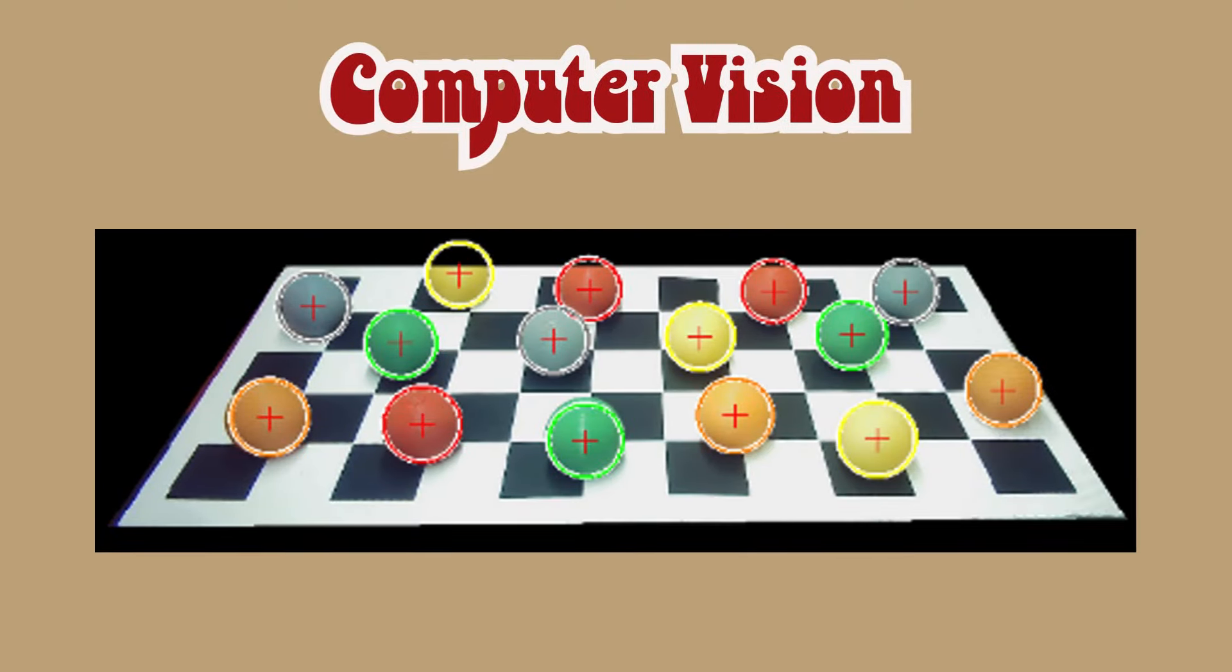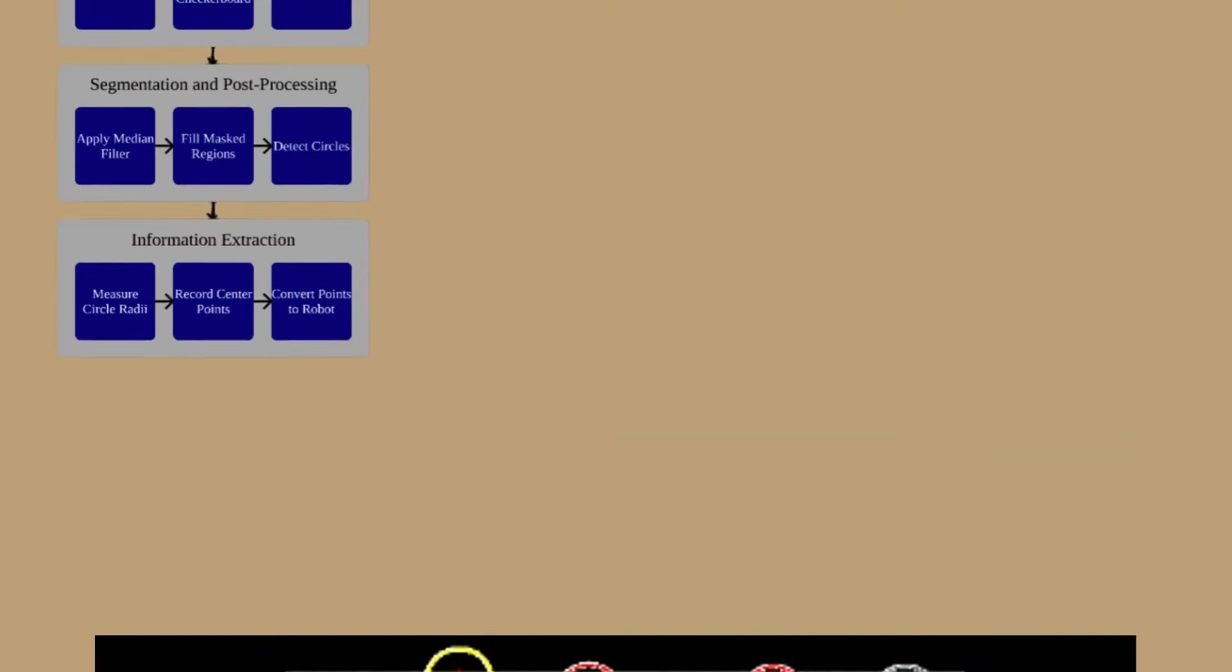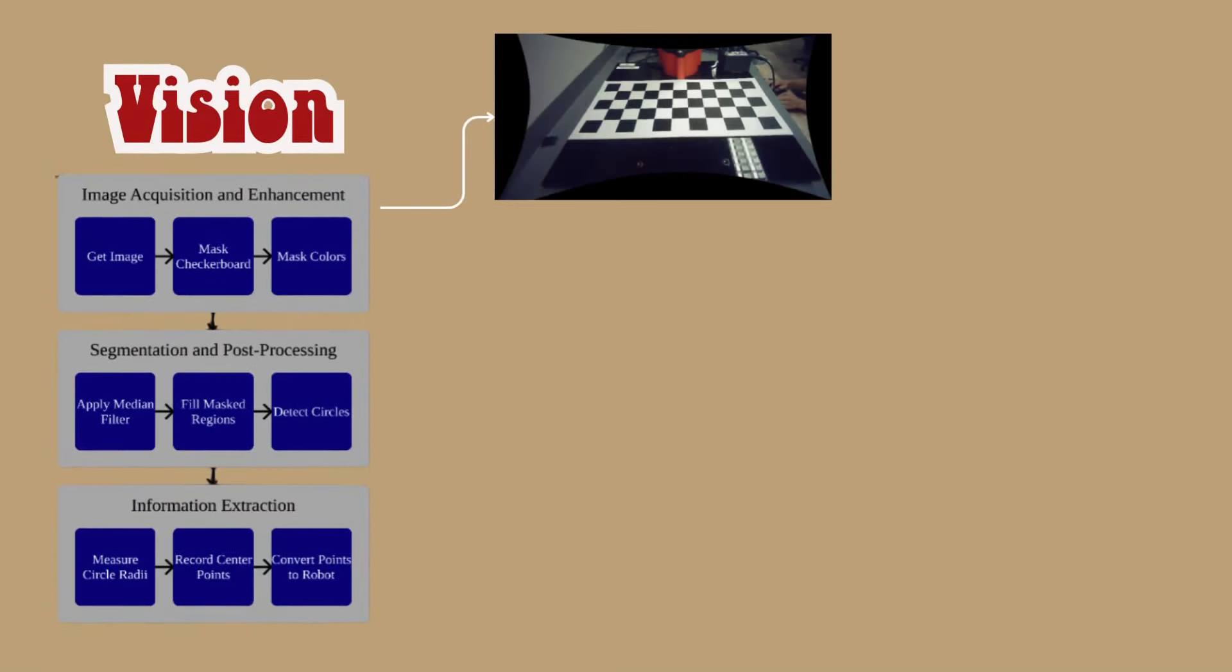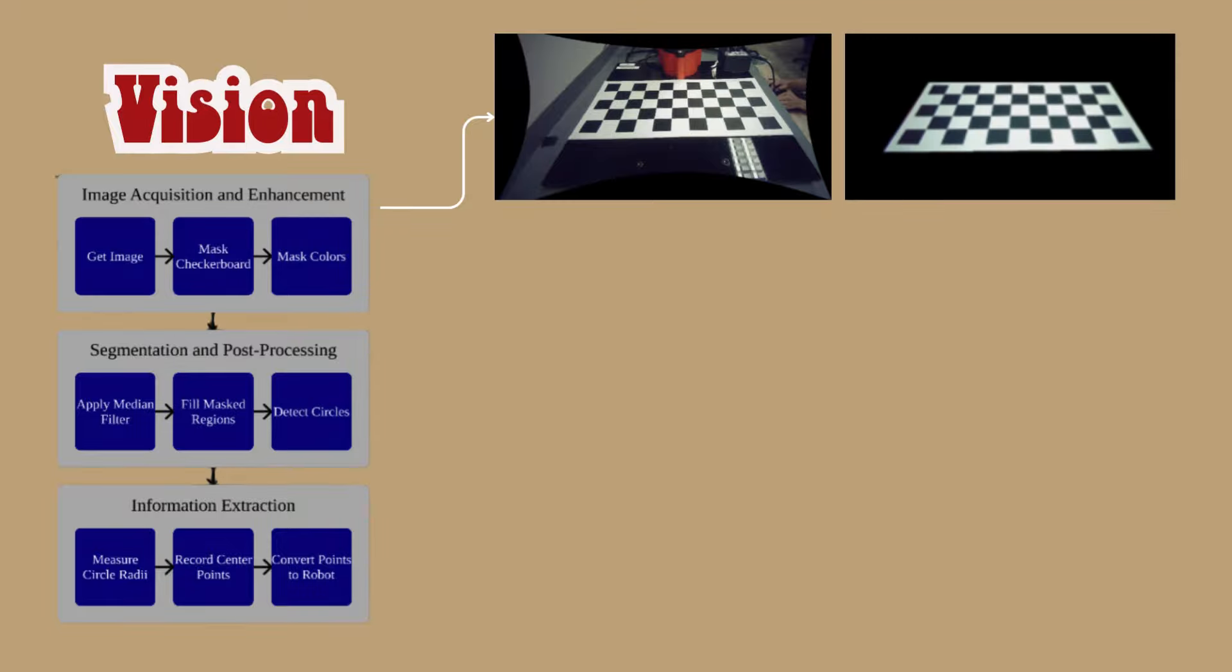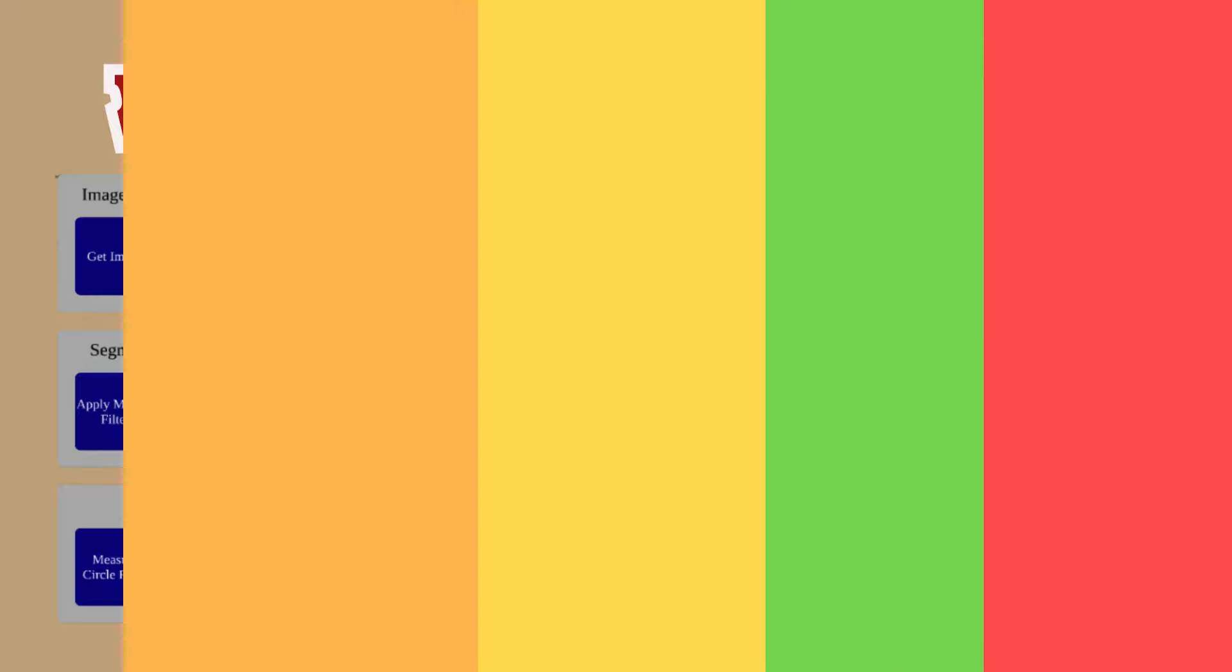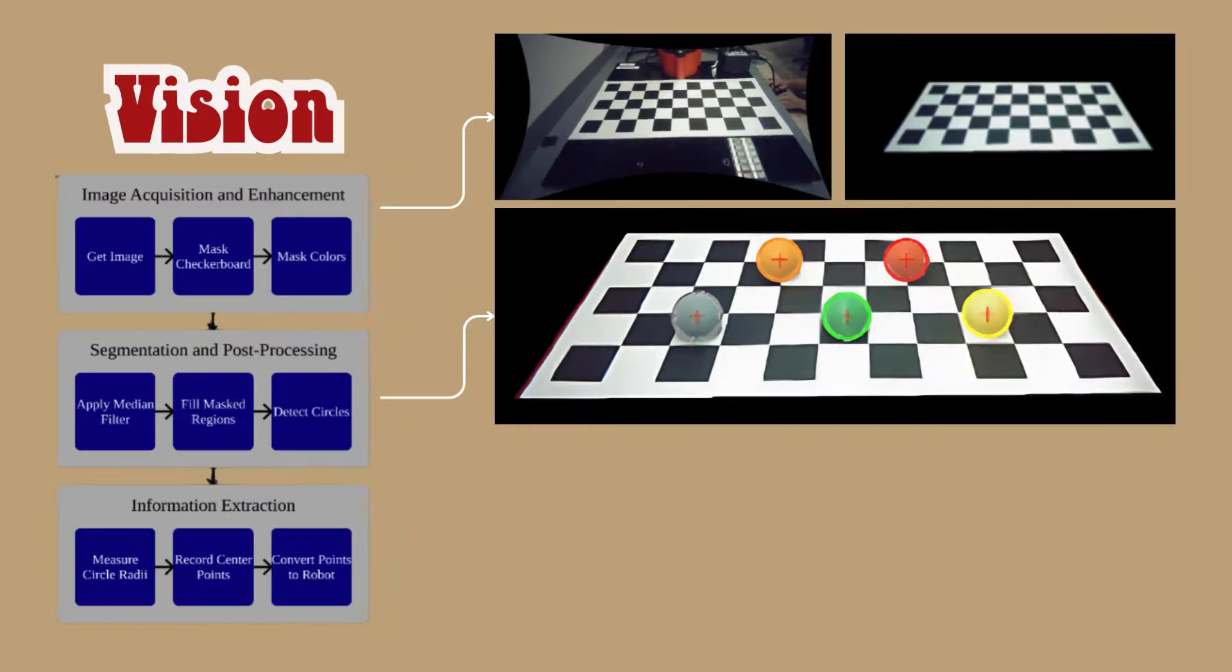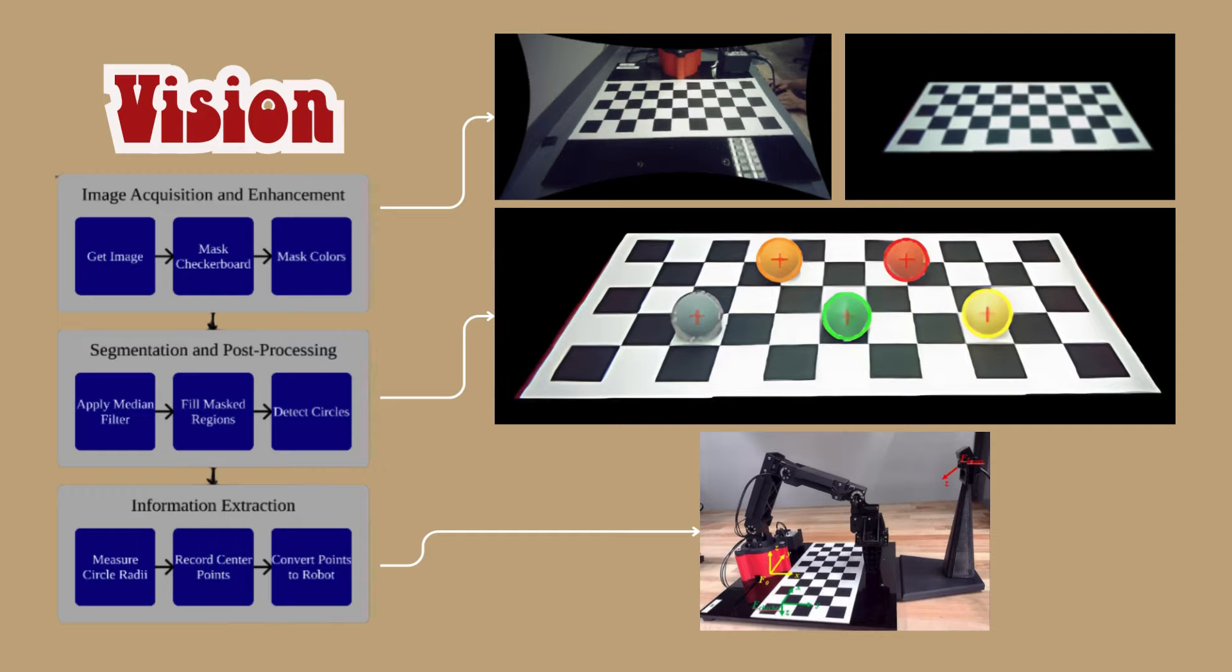That's where computer vision comes in. This is how the robot knows where to go. The robot gets an image from the camera and undistorts it. Now, we remove background noise with a mask of the checkerboard. We also use the HSV color space in MATLAB to find pixels in the image that match the colors of the balls. If we find a large clump of pixels that are all a certain color, then congratulations! The robot has found a ball!